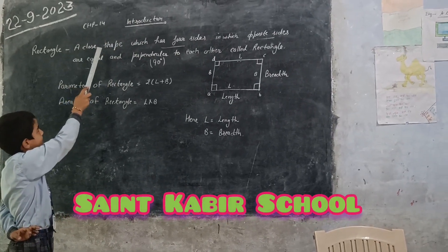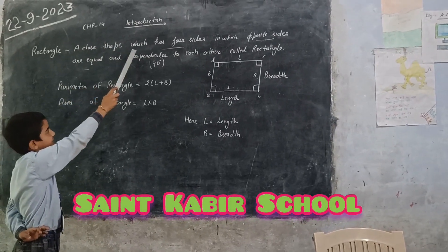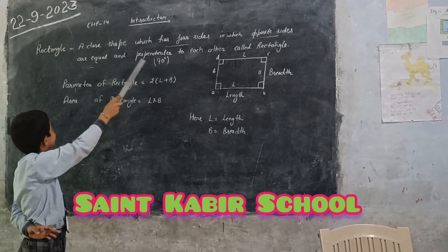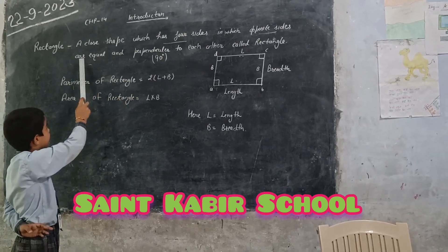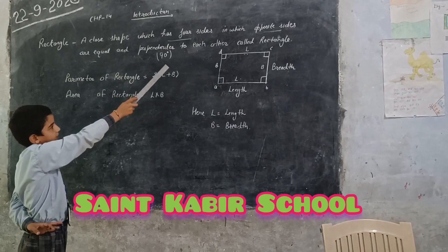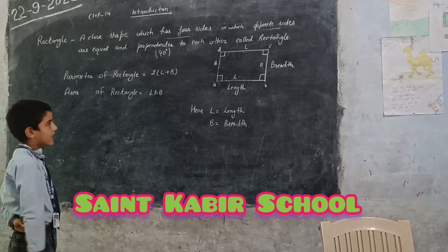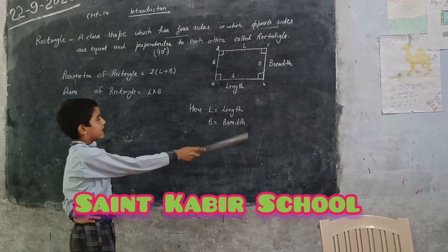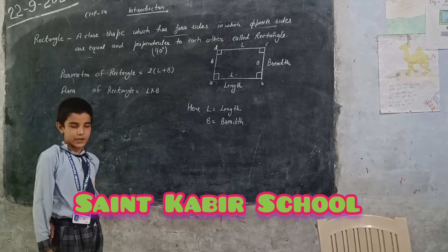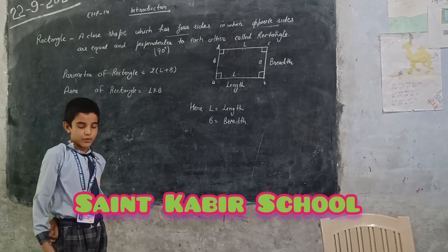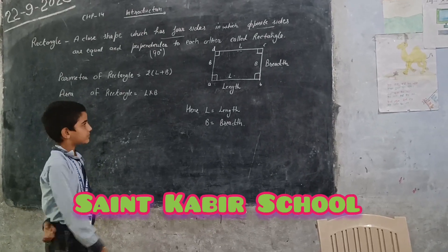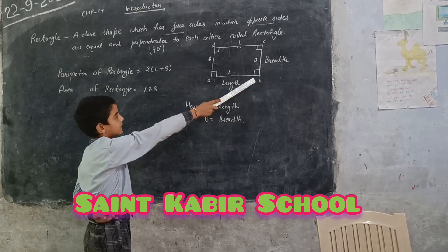A closed shape which has 4 sides, in which opposite sides are equal and perpendicular to each other. A closed shape which has 4 sides in which opposite sides are equal and angles equal to 90 degrees.